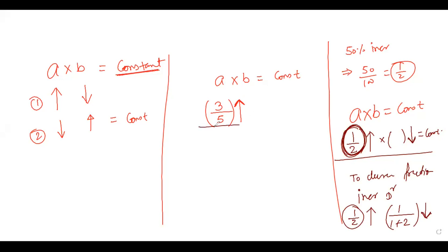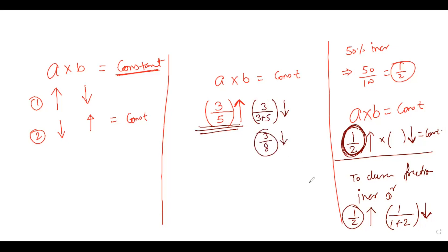Applying the same concept: if the first quantity is increased by 3/5, then to keep the product constant, the second quantity should be decreased by 3/(3+5), which is 3/8. So the second quantity should be decreased by 3/8. Now let us come back to the question.